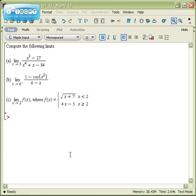The basic idea in Maple to take a limit is to type the function that you want to work with. So for the first example, x cubed minus 27 divided by x to the fourth plus x minus 84. So I'll enter that, make sure I got it right.